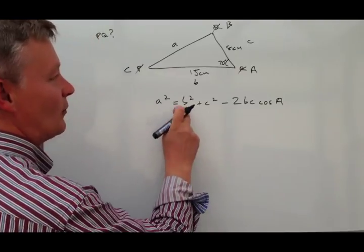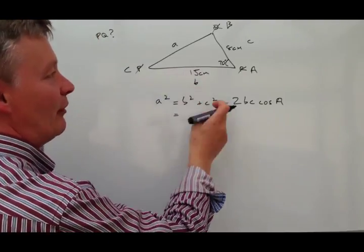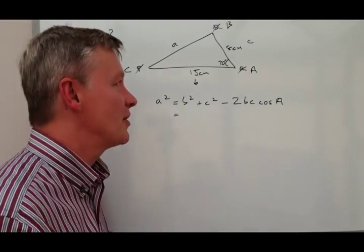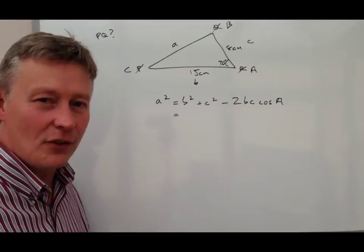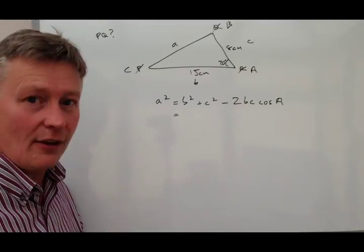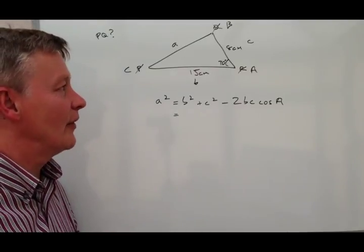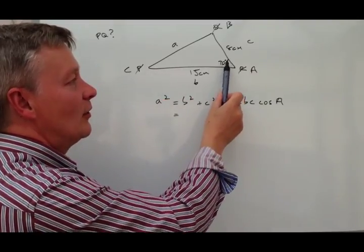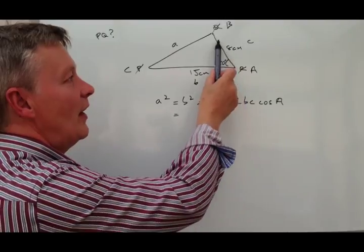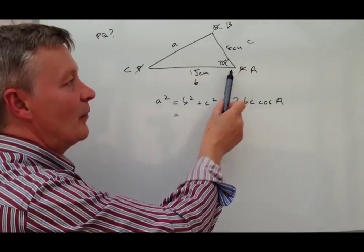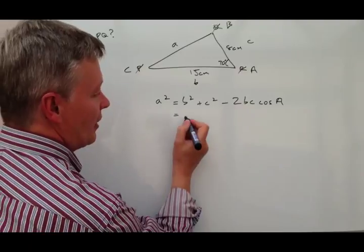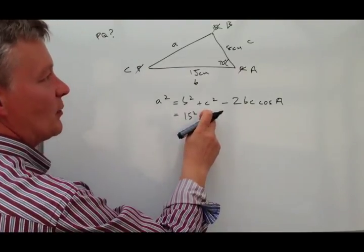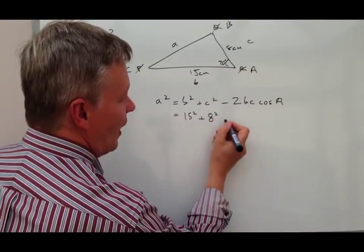OK, so B squared. Well, that's B is here, which is 15. Now, bearing in mind with all of these questions, they don't apply to right angle triangles. Right angle triangles generally tend to use SOHCAHTOA, so just be a little bit careful of that. What you're usually given is this length here, the angle that's included, and then this length here. OK. So B squared is going to be 15 squared plus C squared, which is going to be 8 squared